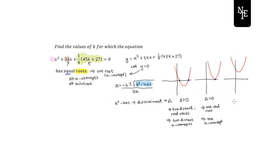The last situation is where your discriminant is less than zero, in other words negative. In that case you have no real roots, meaning no x-intercepts. That's the theory you need to know.